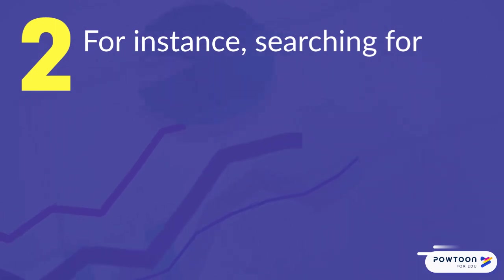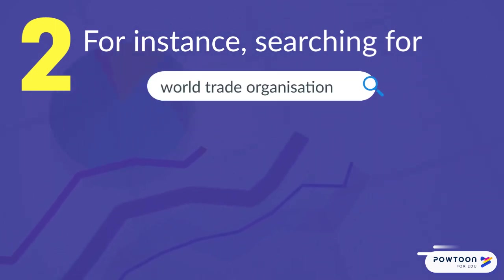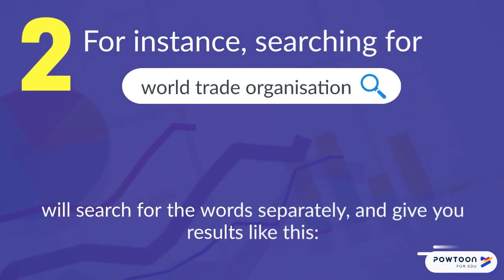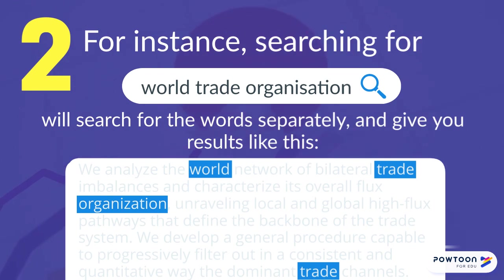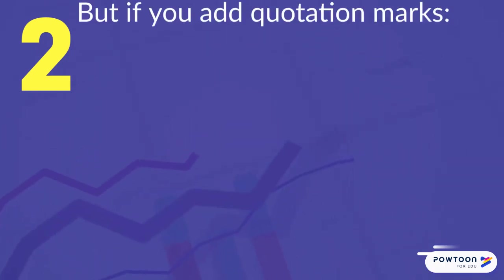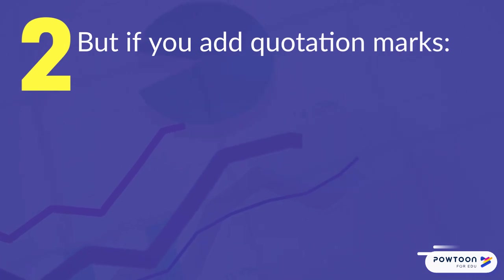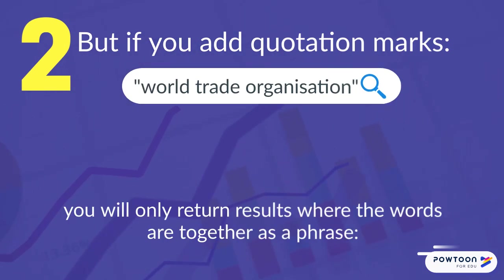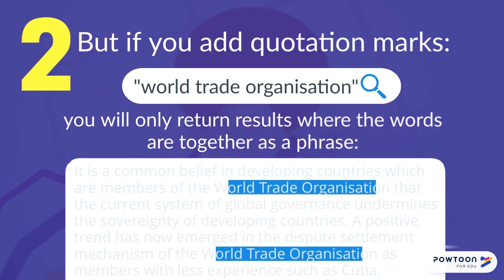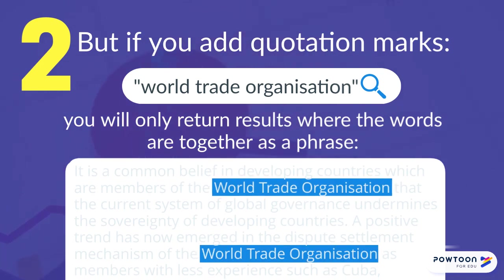For instance, searching for World Trade Organization will search for the words separately and give you results like this. But if you add quotation marks around World Trade Organization, you will only return results where the words are together as a phrase.